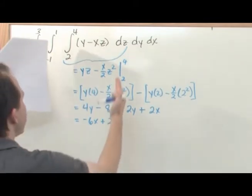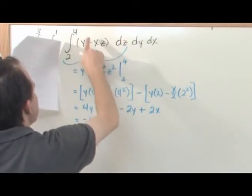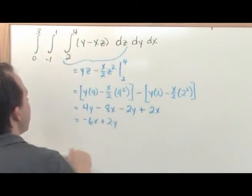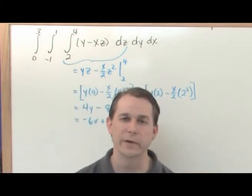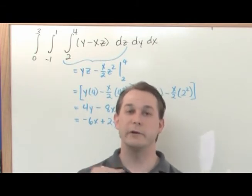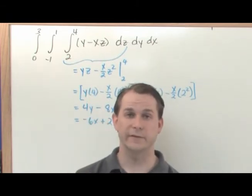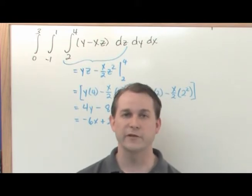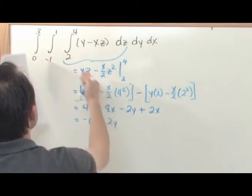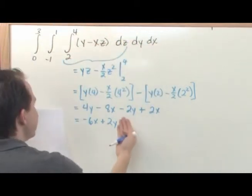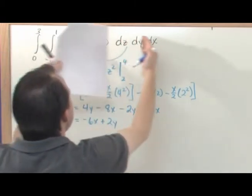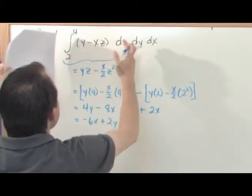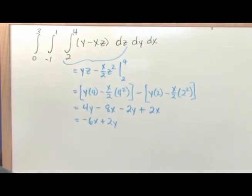When I integrated the inner function and plugged in the limits of integration into the z's, I got a function of x and y back. Integrating along z and plugging in values of z, you always get a function of x and y back. Taking this function and integrating along dx and dy reduces the problem to a double integral — the same kind you've done in previous sections.